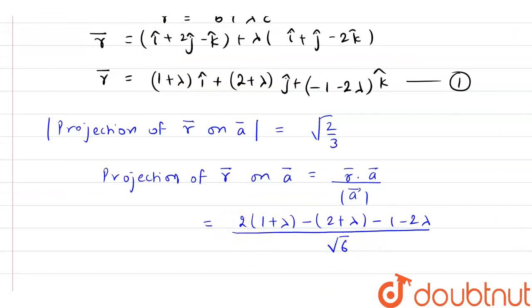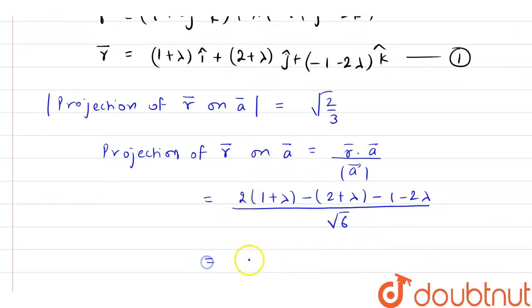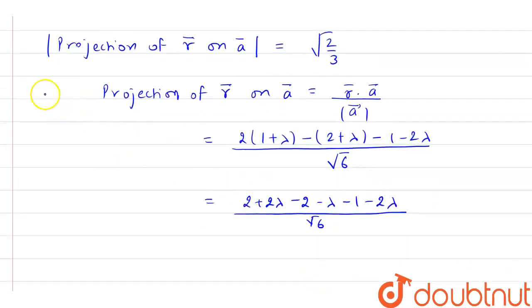Now if you solve this, you will get 2 plus 2 lambda minus 2 minus lambda minus 1 minus 2 lambda divided by root 6. Now 2 lambda will get canceled out and we have 2 also get canceled out, and we have minus 1 minus lambda, that is minus of lambda plus 1 by root 6.